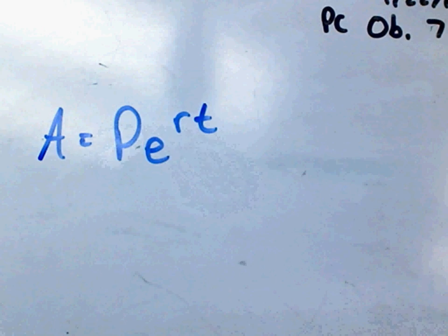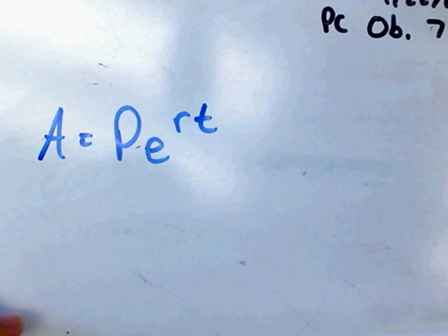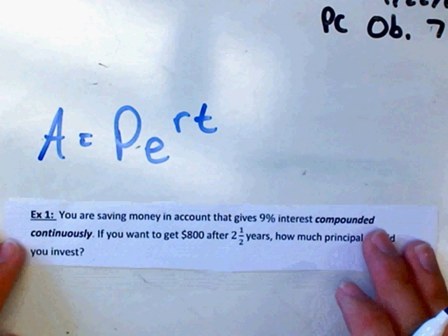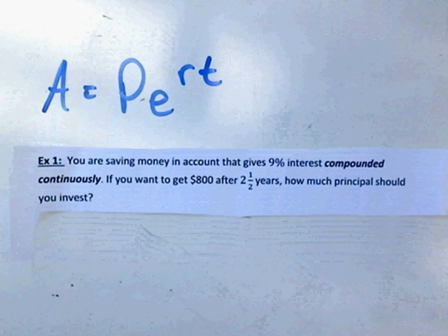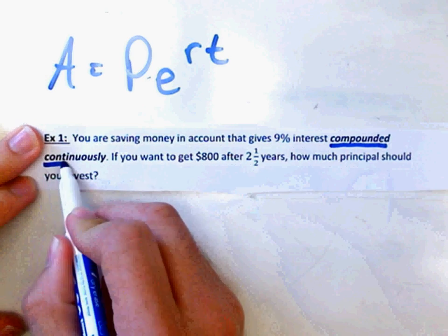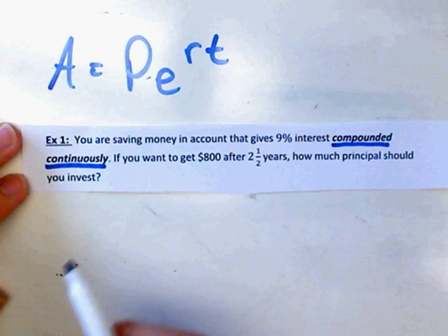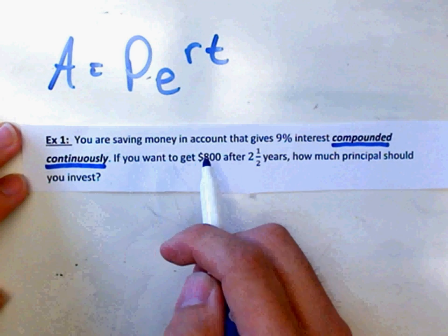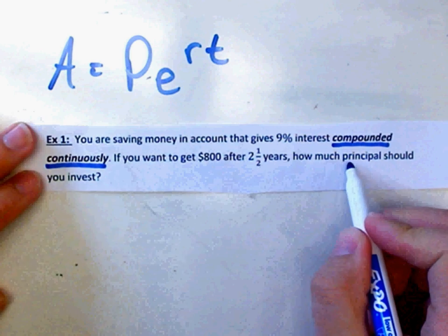Keywords that we're looking for whenever we're solving a problem like this are interest and continuously compounded. So here's an example. You're saving money in an account that gives 9% interest compounded continuously. And I've got that bolded because that's your buzzword. That means you're going to use this formula and not the other compound interest formula. We want to get $800 after two and a half years. We want to know how much principal should we invest.